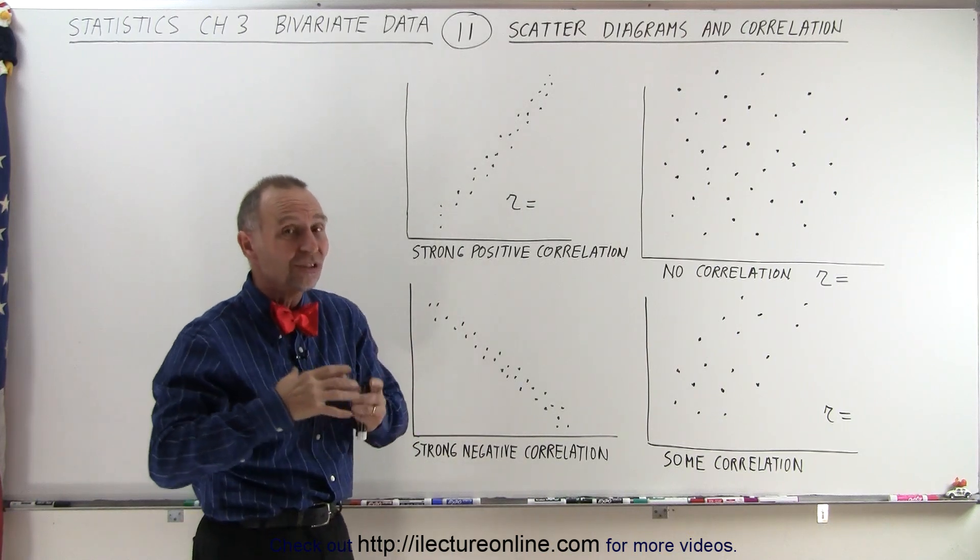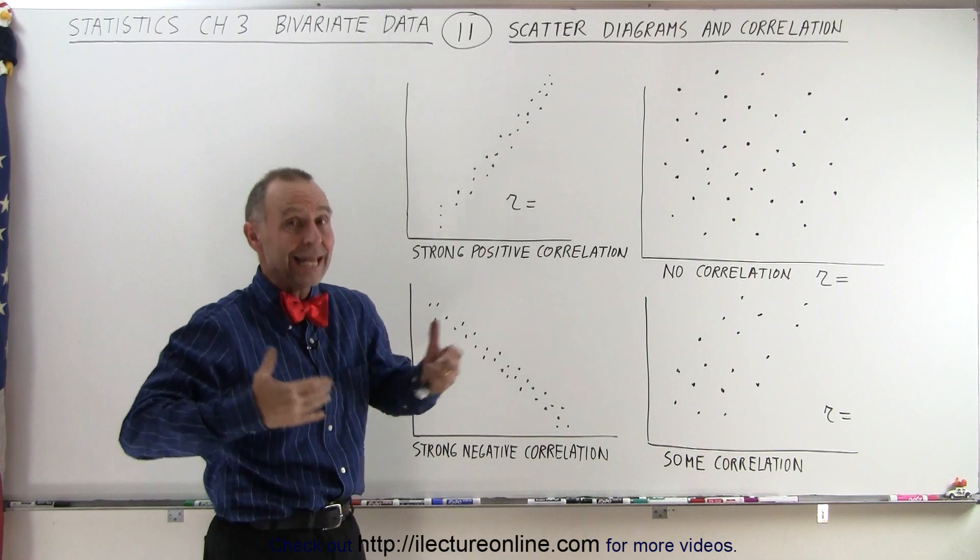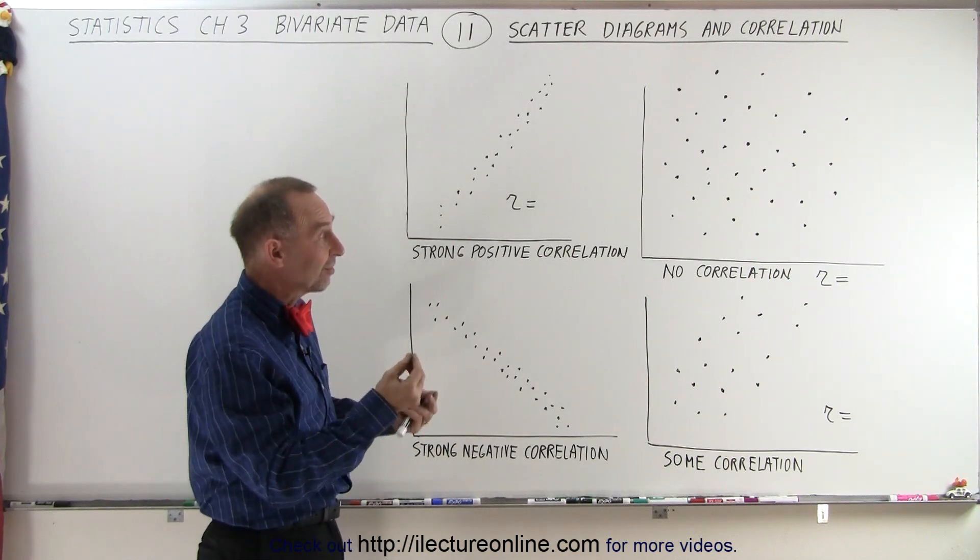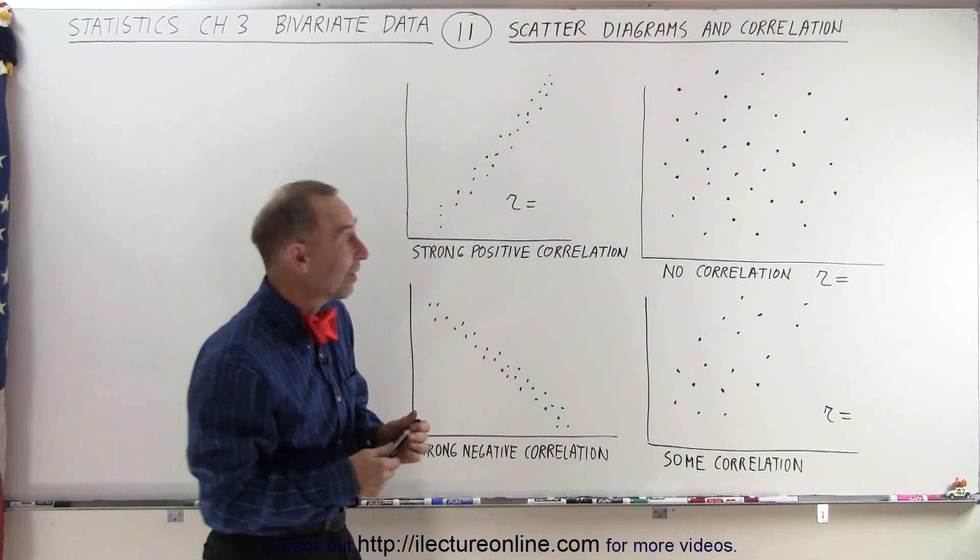In other words, I could draw a best fit line in almost any direction, or really in any direction, and I would have about the same number of data points on one side versus the other.